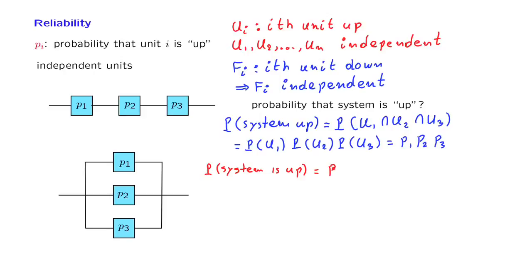And the system will be up as long as either unit 1 is up, or unit 2 is up, or unit 3 is up. How do we continue from here? We cannot use independence readily, because independence refers to probabilities of intersection of events. Whereas here, we have a union. How do we turn a union into an intersection? This is what De Morgan's laws allow us to do, and involves taking complements.